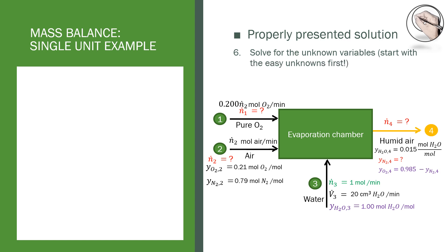Once you have all the necessary equations and you know you can solve the problem, you should start with solving for the easy unknowns first. In our case that is the water balance. We know the input flow rate of water and the output composition, so we can solve for the molar flow rate of stream 4.